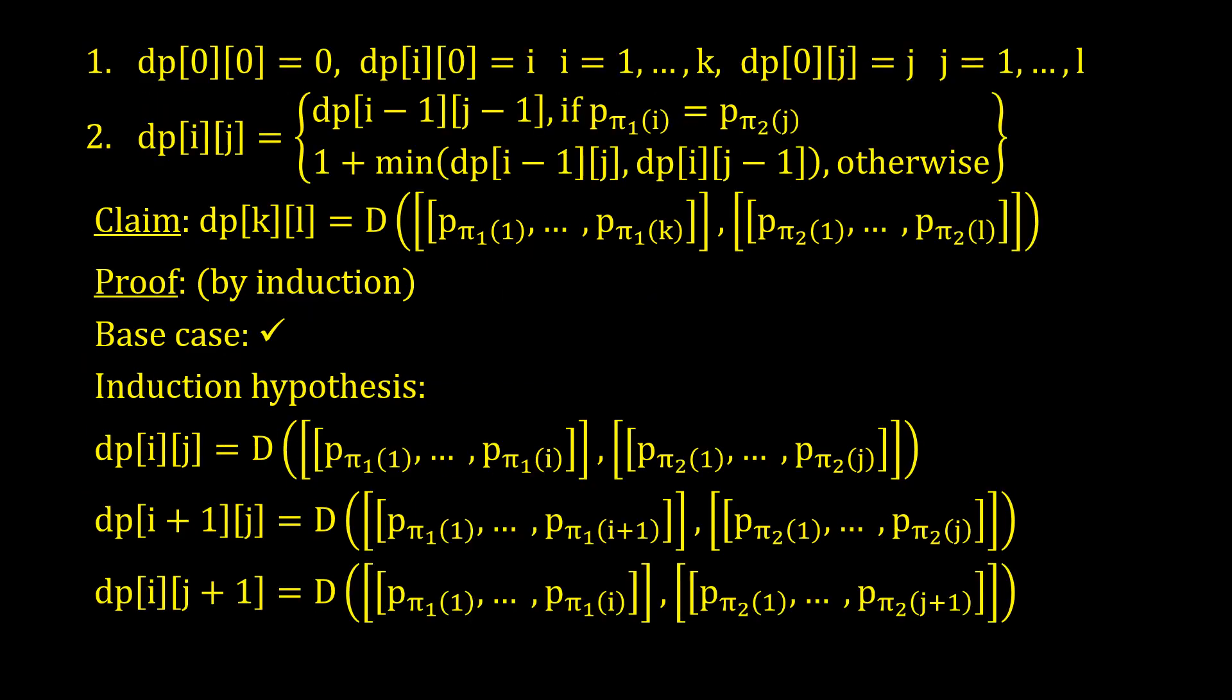Claim. The else element of the k-th row correctly represents the dissimilarity between the two arrangements. Once again we prove by induction.